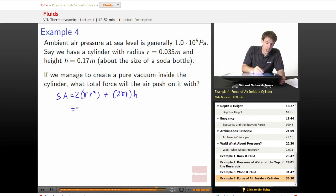We substitute everything in: we've got 2π(0.035)² plus 2π(0.035)(0.17).